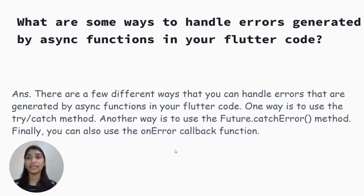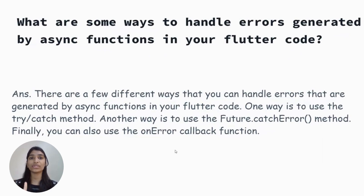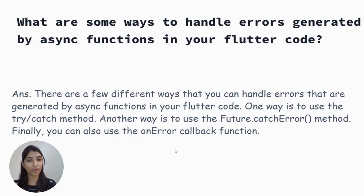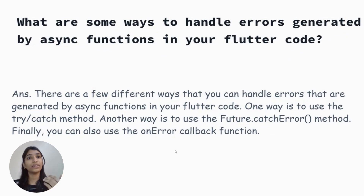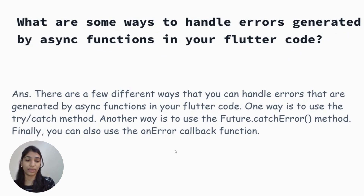The next question is: what are some ways to handle errors generated by async functions in your Flutter code? There are two ways to handle the error. First, write all your code inside a try-catch block. Another way is to use the method future.catchError() and perform the error-handling action in that particular method.